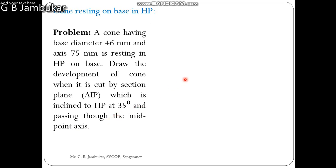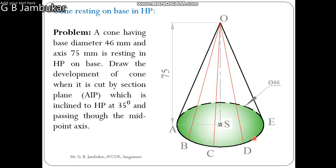First we see the isometric view of a cone. The cone having base has a circle and the diameter of the circle is given, which is 46 mm. S is the center point of the cone. From S, perpendicular to the base, there is an axis and the axis height of the cone is 75 mm. This point O is called the apex point. For the cylinder at the top there is a circle, and for the cone there is an apex point.